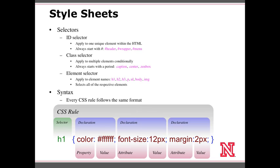If your ID value is 'wrapper' in the HTML, in the CSS you reference that wrapper with a hashtag to identify it as an ID selector. Class selectors, as you may remember from the HTML lecture, are similar to IDs but they can be used multiple times and apply to multiple elements within one HTML document. Class selectors always start with a period. So if you use a class of 'caption' on a couple elements, you reference that in the CSS using .caption and so on.